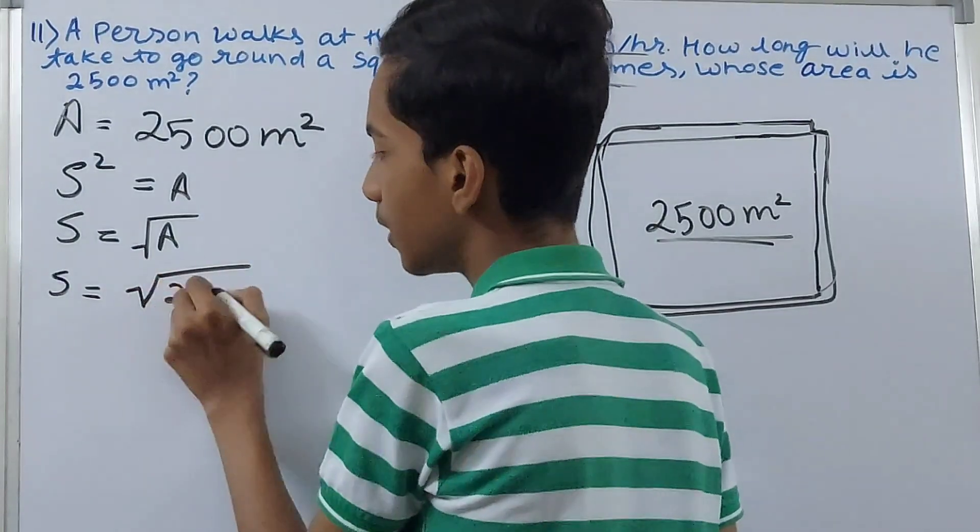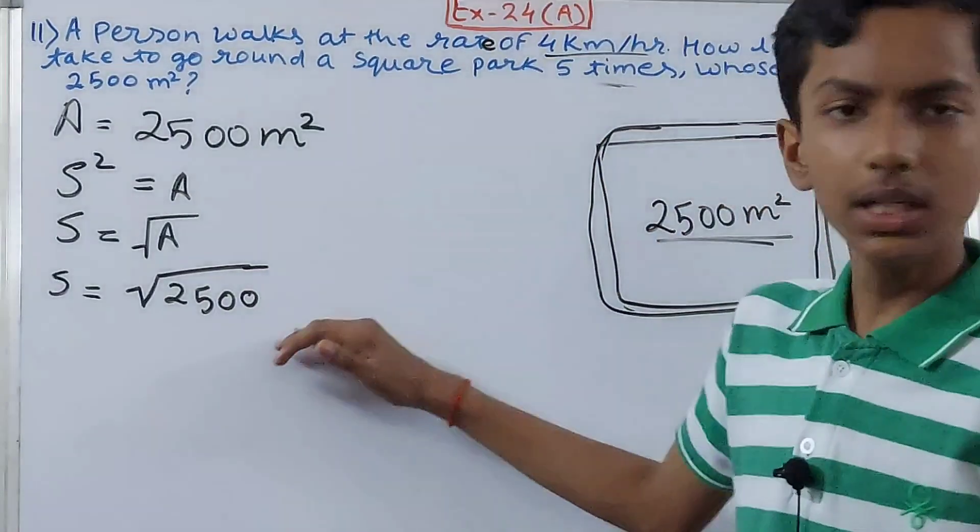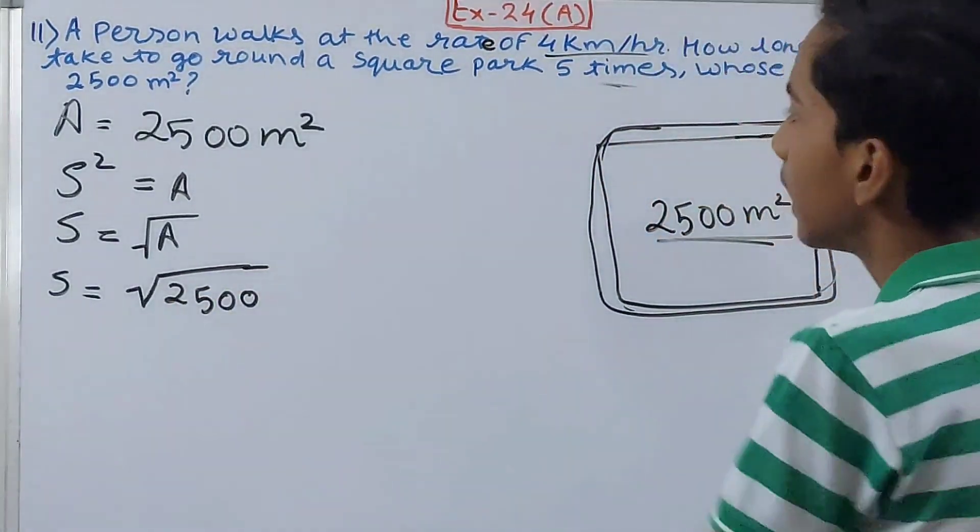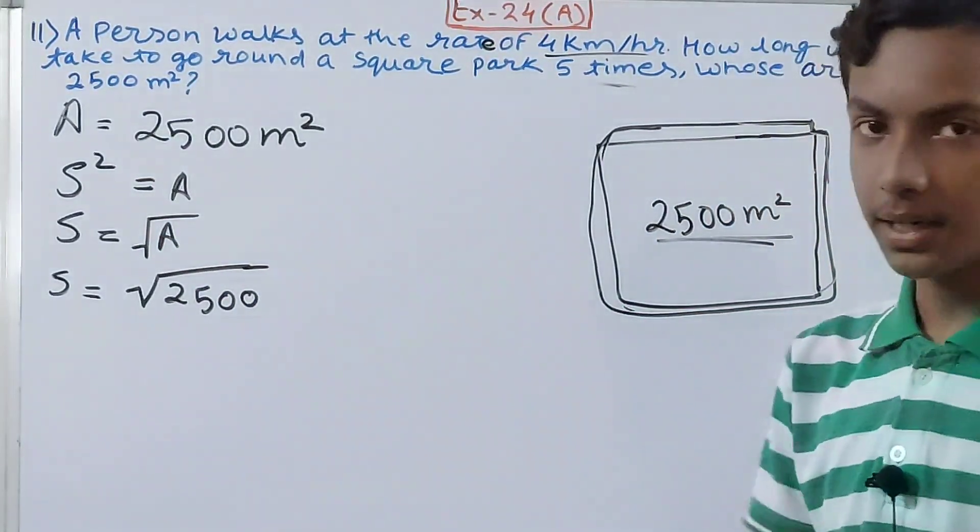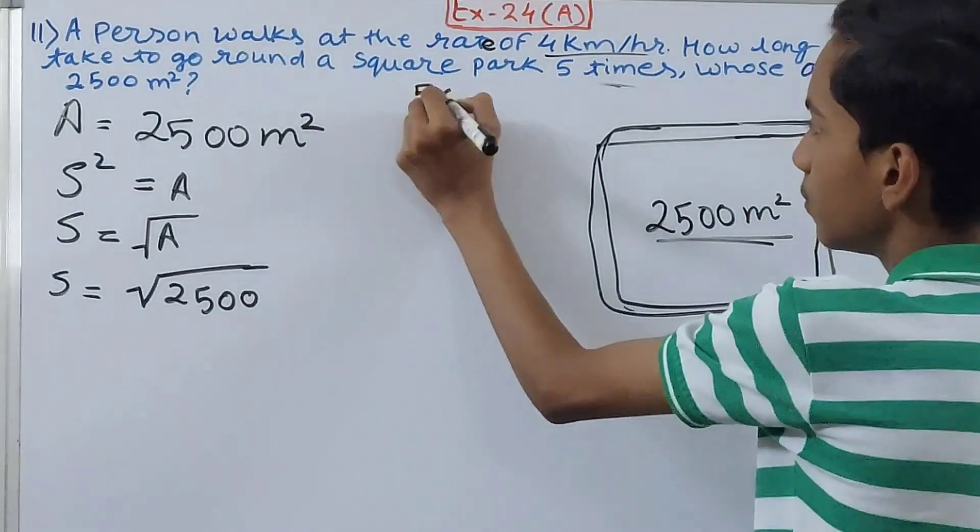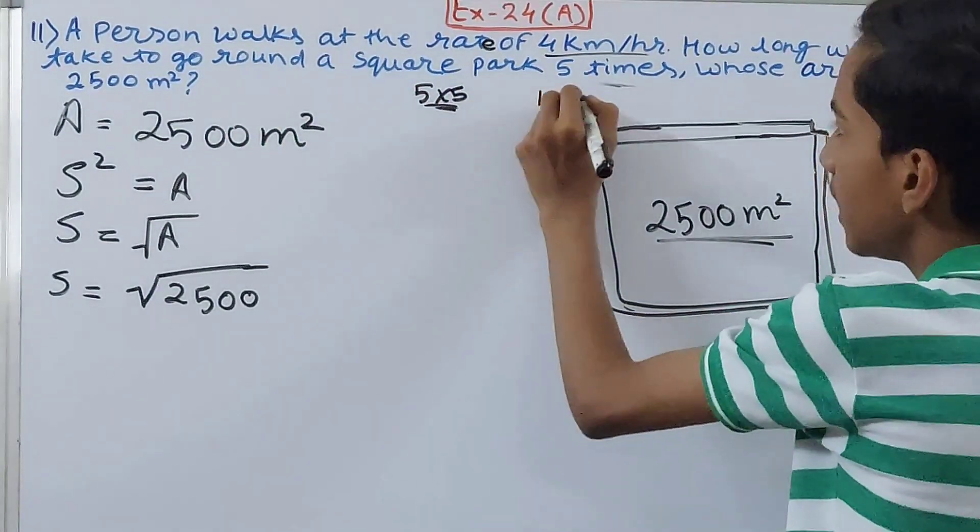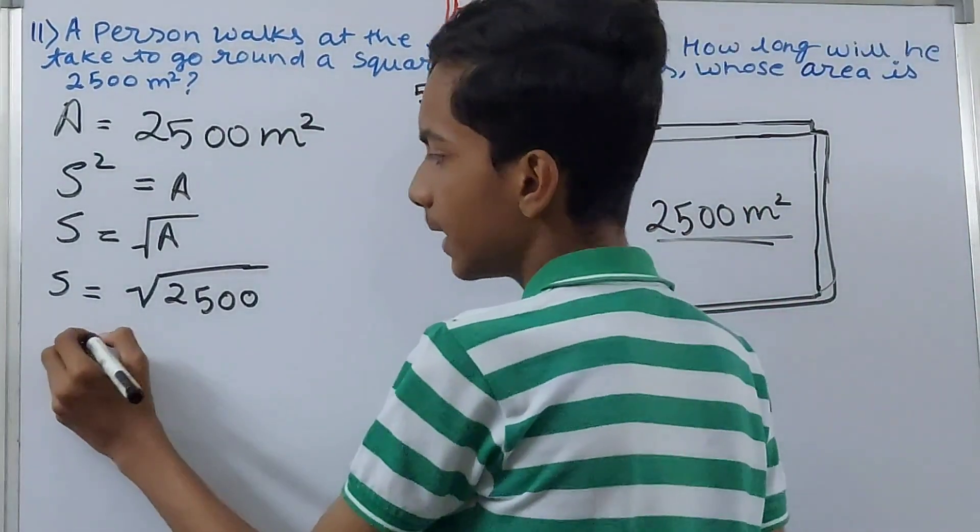What is the square root of 2500? First, 25 - the square root of 25 is 5, because 5 times 5 equals 25. Then two zeros are there, so 10 times 10. This can be written as 50 times 50.